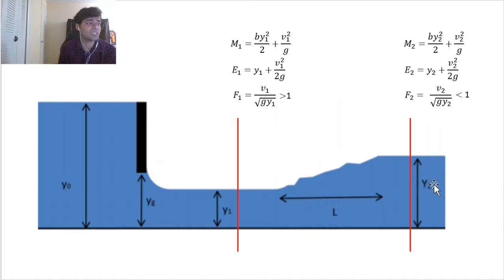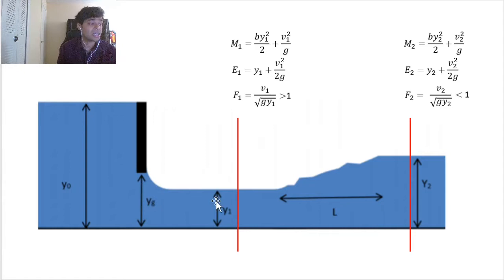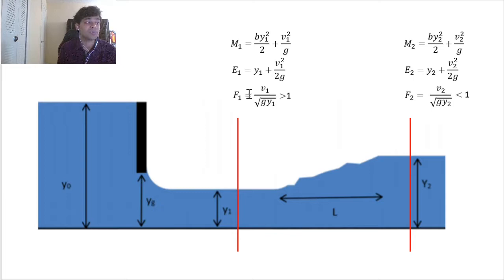To know which depth is supercritical or subcritical, we use the critical depth or calculate the Froude number. The Froude number is the ratio of inertia force to gravitational force — it tells us how strong the velocity is relative to gravity. When the Froude number is greater than one, it is supercritical flow; less than one is subcritical flow. When flow transitions from supercritical to subcritical, there is a jump. The length of the jump is that transition zone, and y2 minus y1 gives the height of the jump.